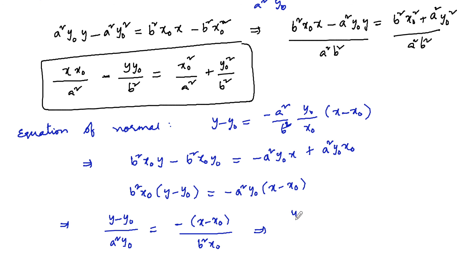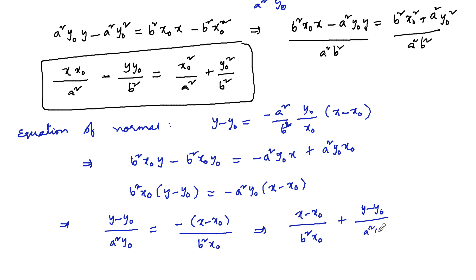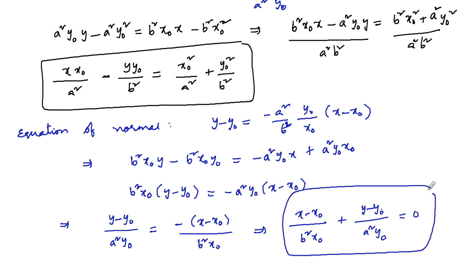Or we can write: (x minus x₀) / b² x₀ + (y minus y₀) / a² y₀ = 0. So this is the equation of normal. Thank you.